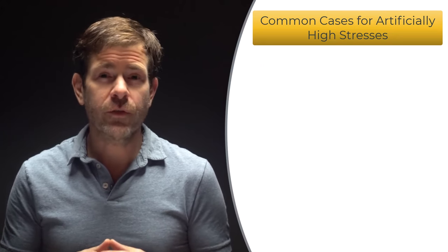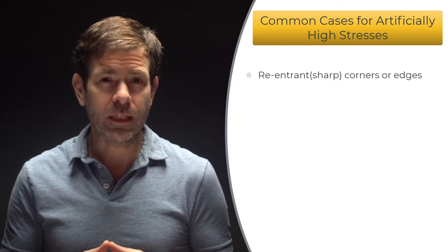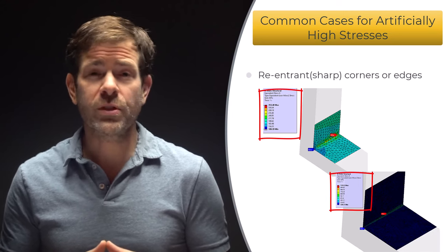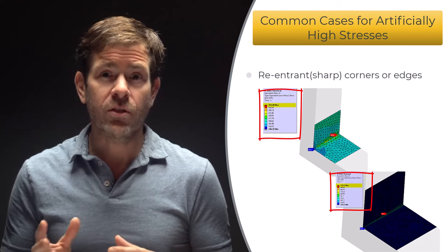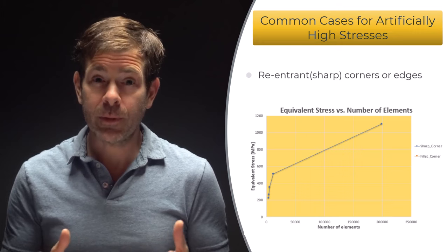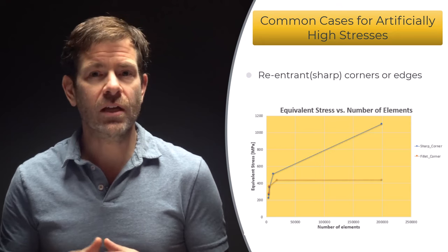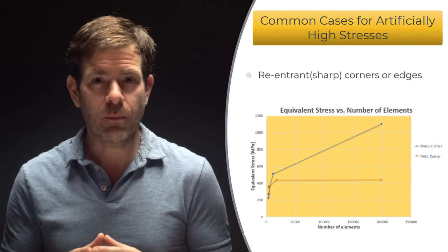For the next case of artificially high stresses at re-entrant corners or edges, this comes up quite frequently in finite element analysis. A sharp corner without a fillet will be the source of a stress singularity. As the mesh size is reduced, the strains and stresses in the sharp corner will tend towards infinity. Typically, we may deliberately leave out small fillets as they tend to drive the mesh size smaller and hence create more computationally expensive models, but then we must understand how to deal with the artificially high stresses they create.